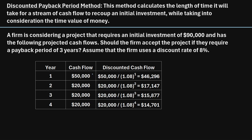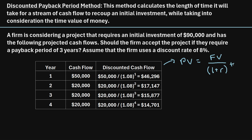Each of these annual cash flows is money coming in the future. So this is $50,000 one year from now — what would the present value of that $50,000 be right now? To calculate that, we can use the present value formula: PV equals the future value divided by 1 plus R to the power of T, where R is the discount rate and T is time.